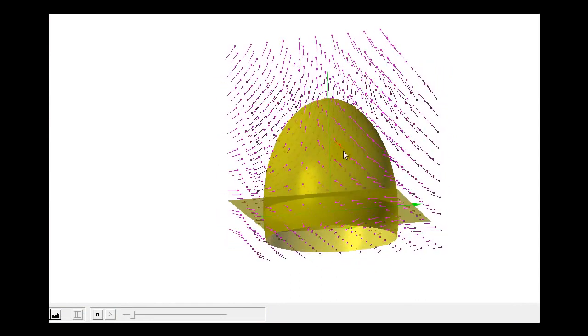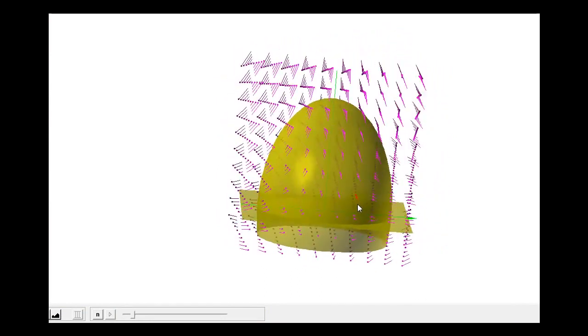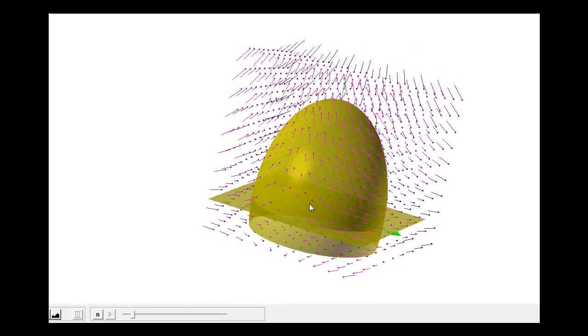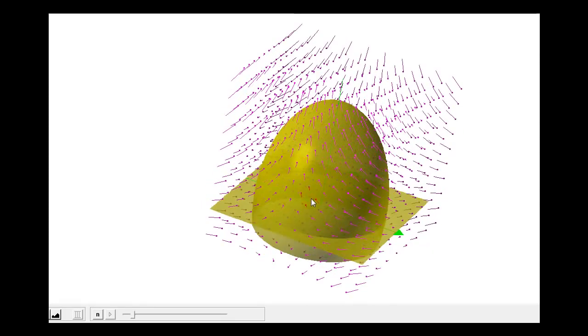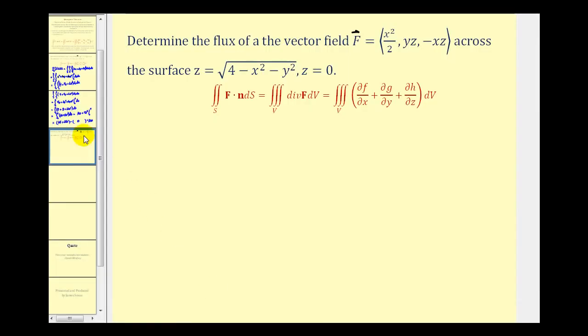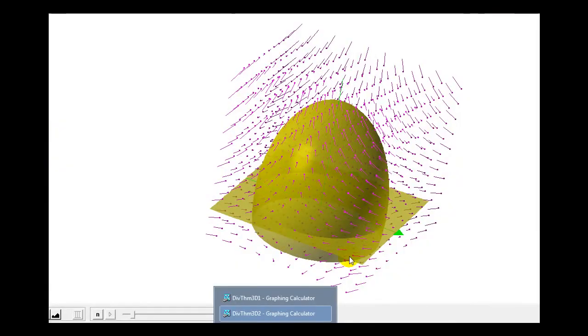Here we see our surface in yellow and our vector field in purple. If the value that we determine is positive, that means the net flow across the surface would be outward and the total divergence of the vector field in this solid would be outward. If it's negative, it would be inward.